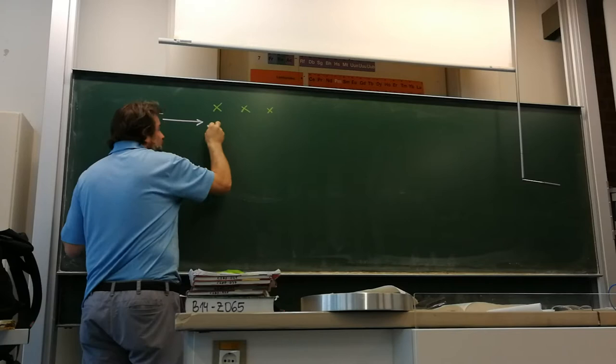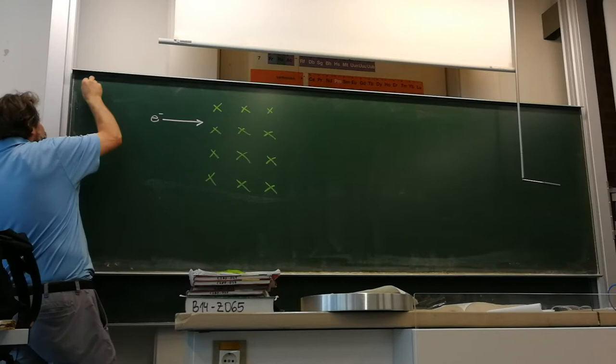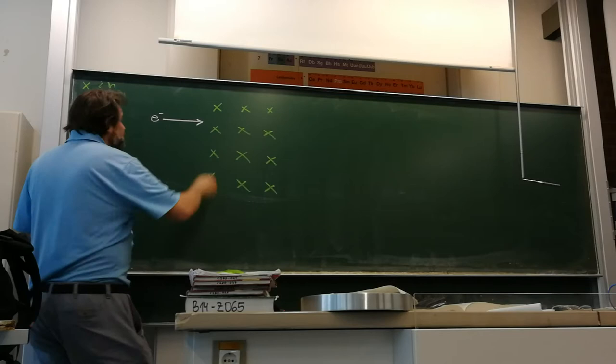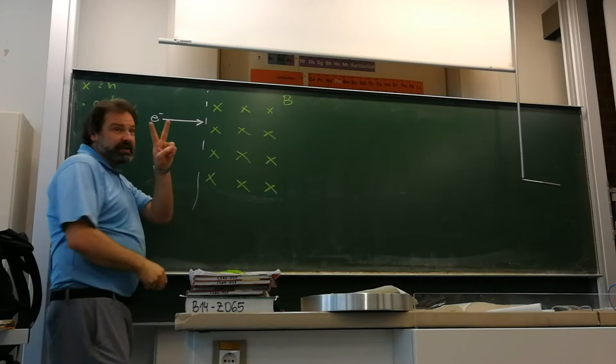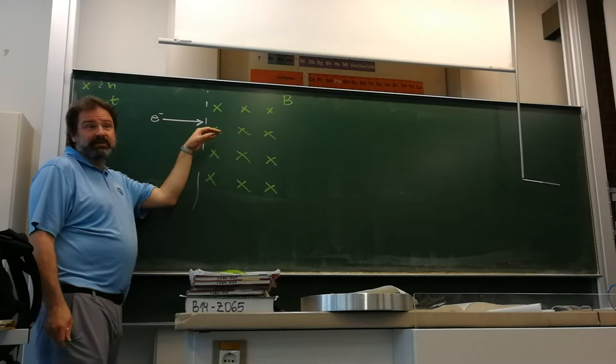So we talked about an electron, for example, moving to the right. There we go. Going into a magnetic field. And we draw the magnetic field like that. Just a reminder about the Robin Hood rule. Haha, R-H-R. Isn't that funny? Okay, so there we go. We also have the right-hand rule.